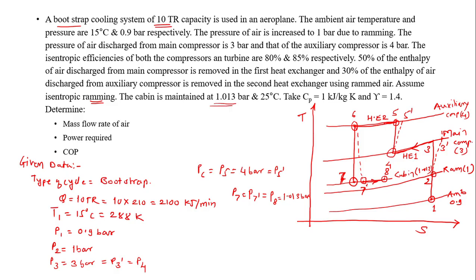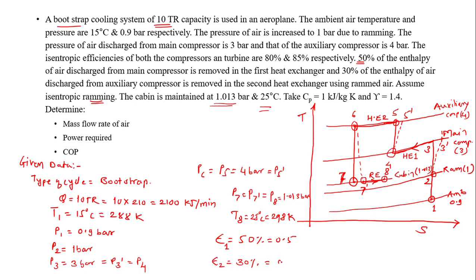The process 7-dash to 8 is the refrigerating effect produced. The condition at point 8 is pressure 1.013 bar and temperature 25 degrees Celsius, so T8 equals 298 Kelvin. The first heat exchanger effectiveness is 50 percent, or 0.5, and for the second heat exchanger the effectiveness is 30 percent, or 0.3.